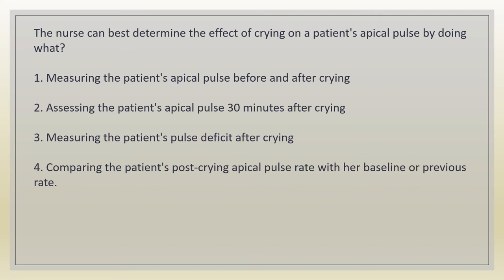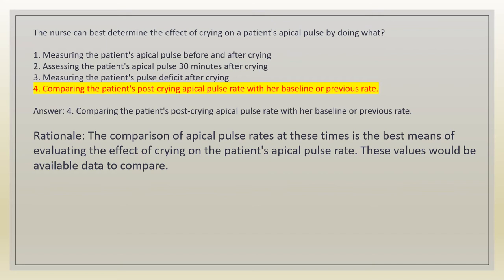The nurse can best determine the effect of crying on a patient's apical pulse by doing what? 1. Measuring the patient's apical pulse before and after crying. 2. Assessing the patient's apical pulse 30 minutes after crying. 3. Measuring the patient's pulse deficit after crying. 4. Comparing the patient's post-crying apical pulse rate with her baseline or previous rate. Answer: 4. Rationale: the comparison of apical pulse rates at these times is the best means of evaluating the effect of crying on the patient's apical pulse rate.